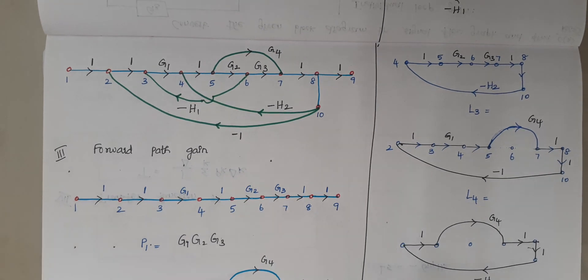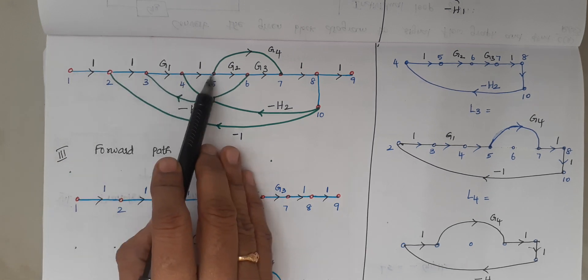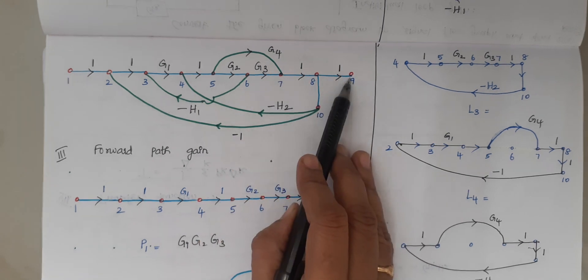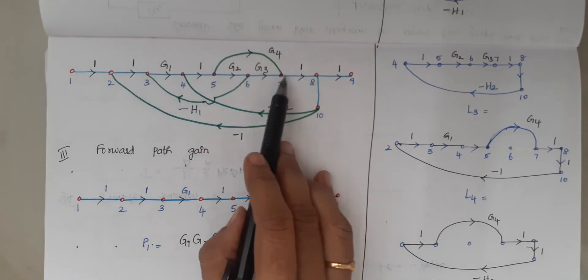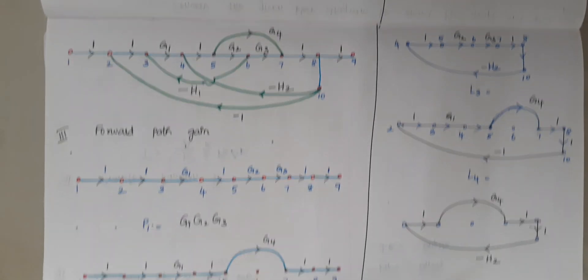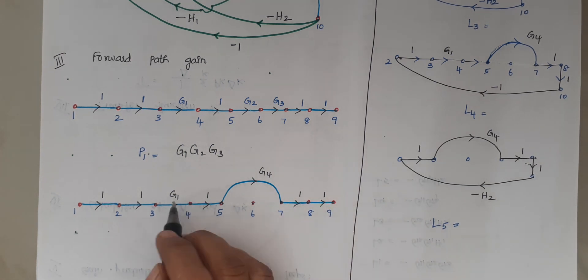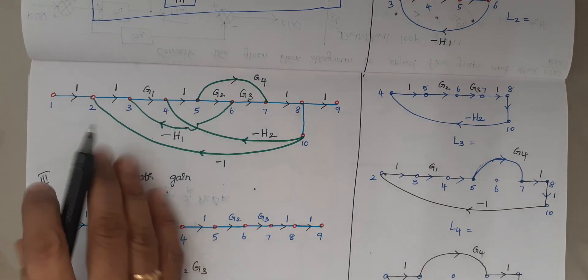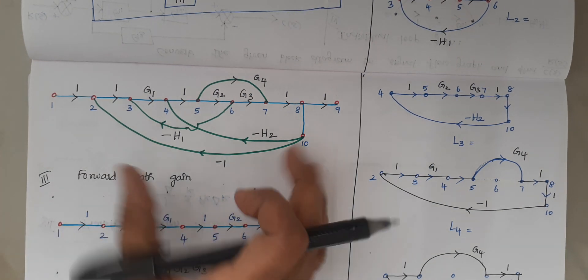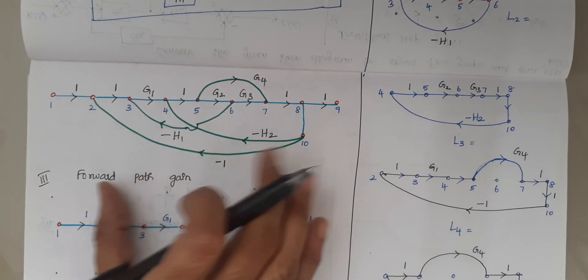Check whether there are any other forward paths. From node 1 to 5, then from 5 to 7 directly, and from 7 to 9, there exists a second forward path — all arrowheads move forward. The gain of this second forward path is G1 into G4. There are no other forward paths, so we have only two forward paths total.